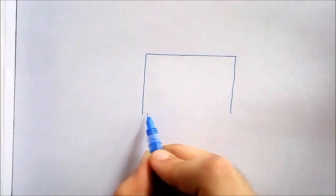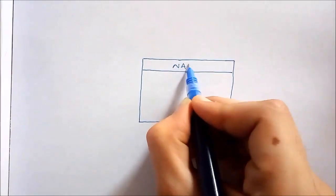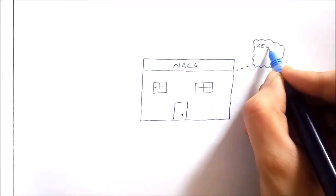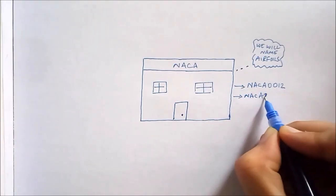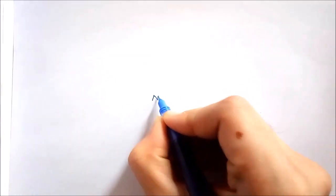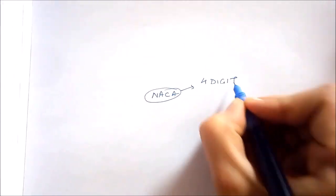Now, how do you read these? So these are basically four-digit and five-digit airfoils and everything is based on chord length. For four digits, the first digit gives maximum camber, the second digit gives distance of maximum camber from leading edge and the last two gives thickness.